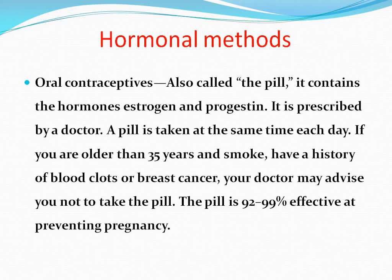Hormonal methods include oral contraceptives, also called the pill. It contains the hormones estrogen and progesterone and is prescribed by a doctor. A pill is taken at the same time each day. If you are older than 35 years and smoke, have a history of blood clots or breast cancer, your doctor may advise you not to take the pill. The pill is 92–95% effective at preventing pregnancy.